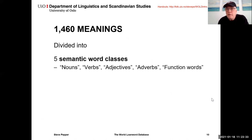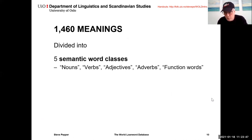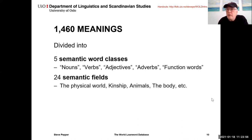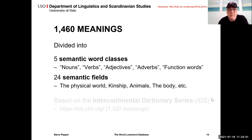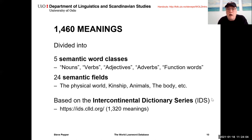The 1,460 meanings around which the data are organized are divided into five so-called semantic word classes: nouns, verbs, adjectives, adverbs, and function words — though all of those labels are in scare quotes. They are also divided into 24 semantic fields such as the physical world, kinship, animals, etc. These semantic fields are based on those found in the Intercontinental Dictionary Series, IDS, about which I'll have a little more to say at the end of the talk.